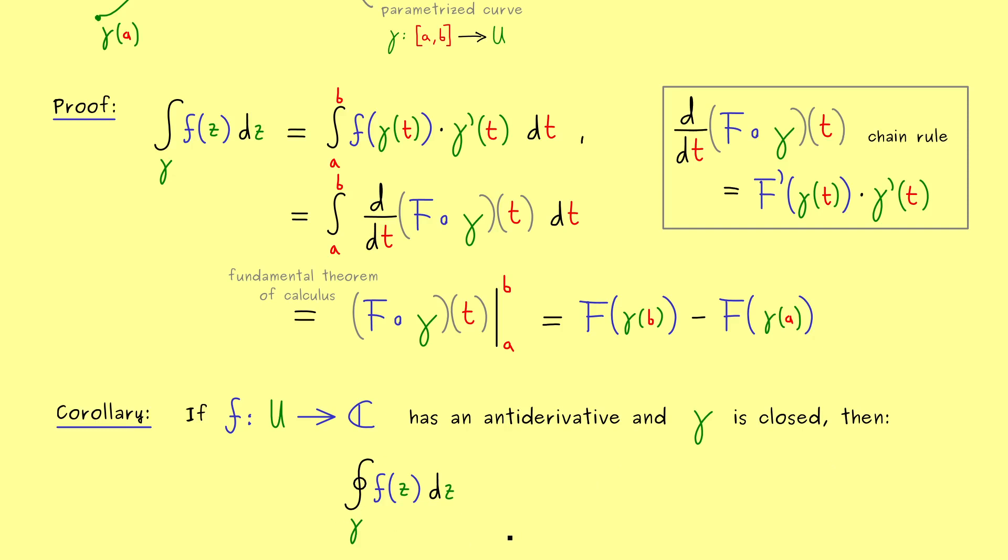Now please recall closed for a curve means that the end point is the same as the starting point. In other words here in the difference both parts represent the same number. Therefore in this case the result of the integral has to be zero.